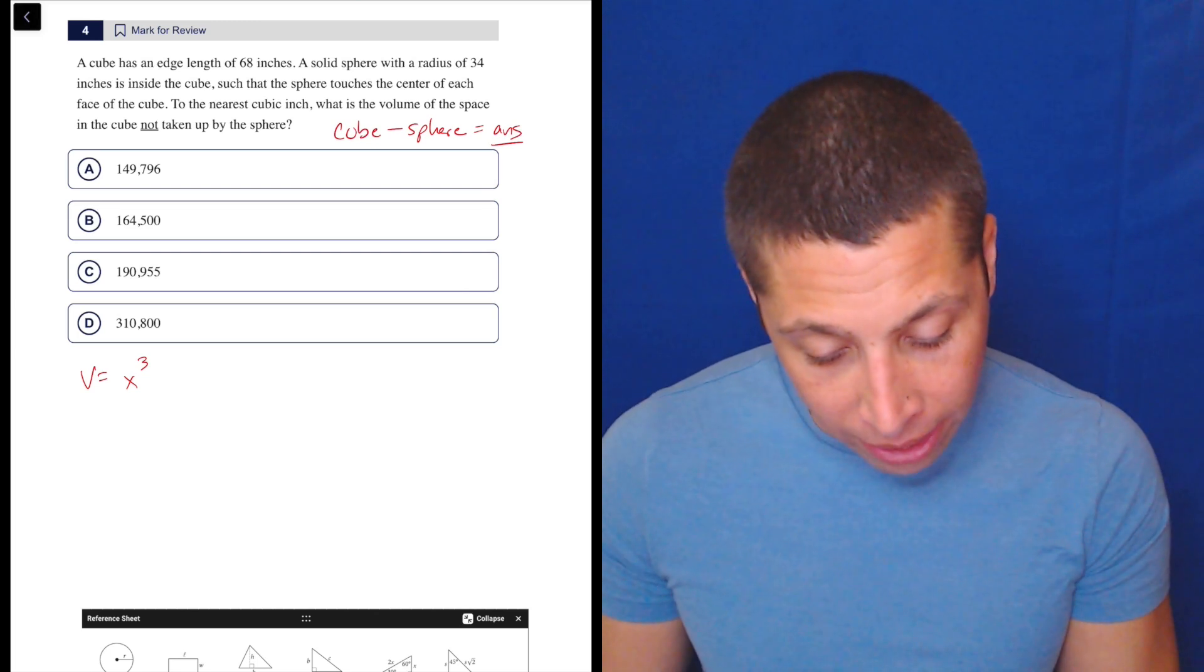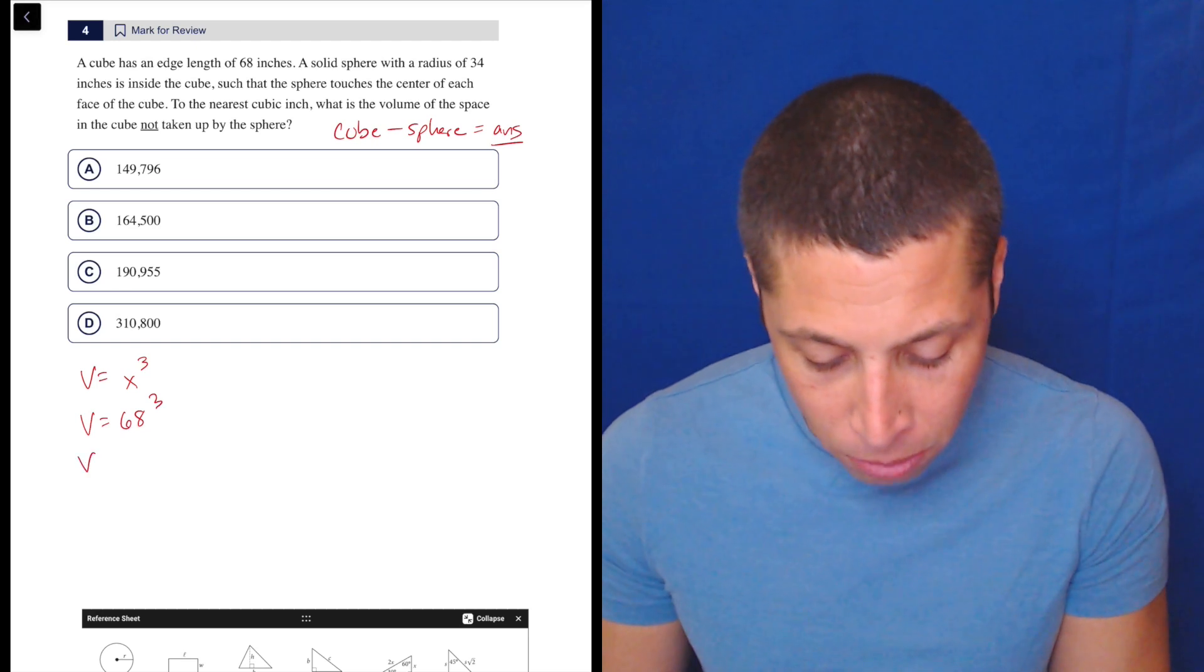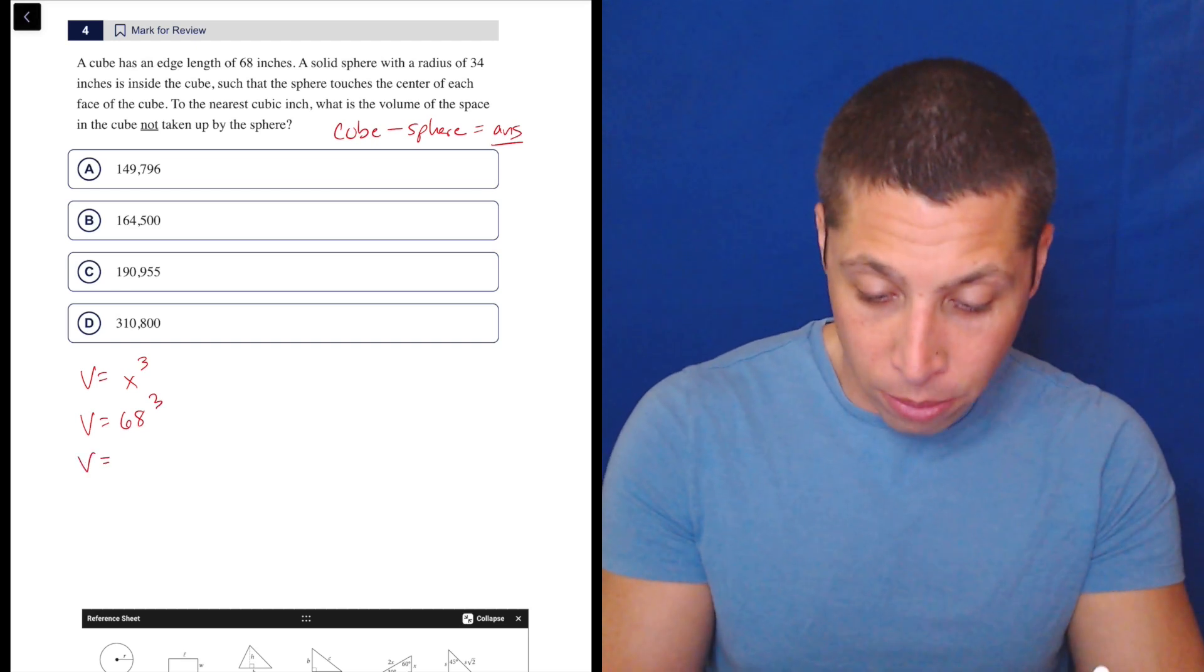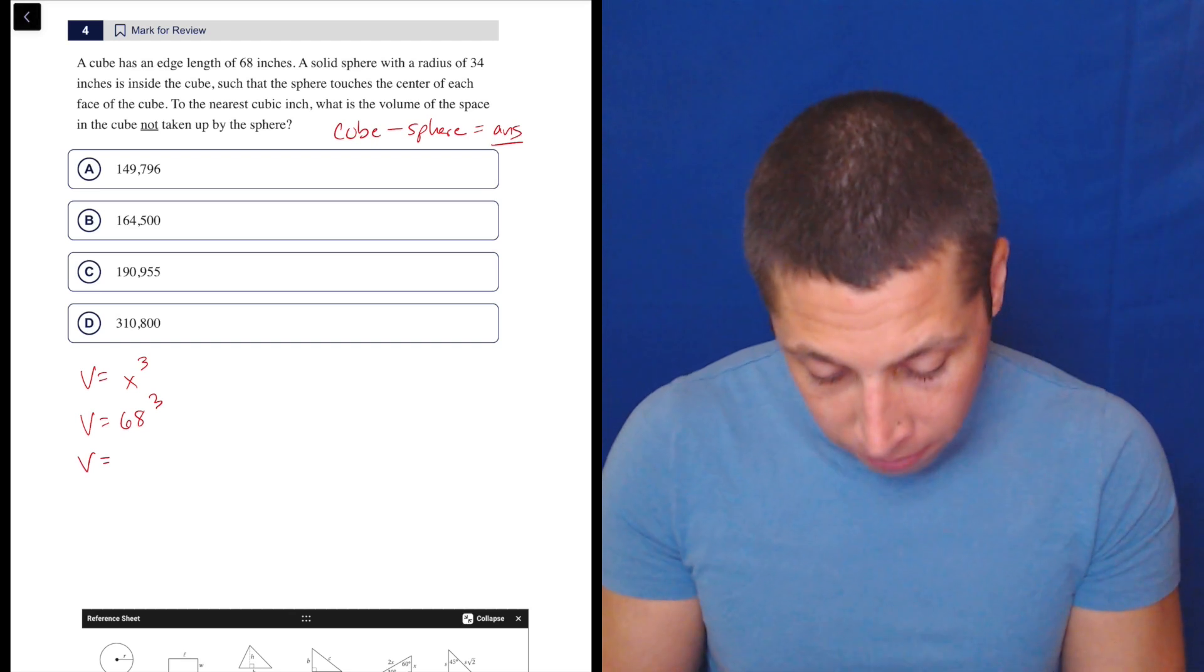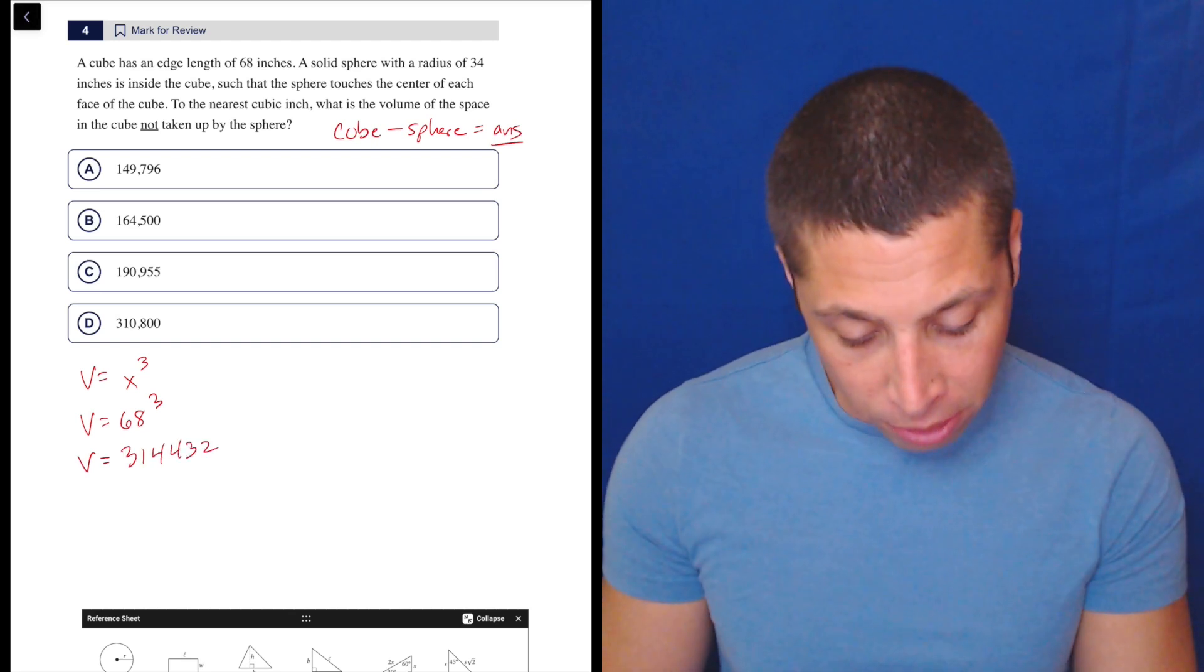So that means a cube with an edge length of 68 inches, the volume of the cube is 68 cubed. Let's get the calculator out for that because no way I know that one. Big number. V is 314,432. Cool. So that's the cube.